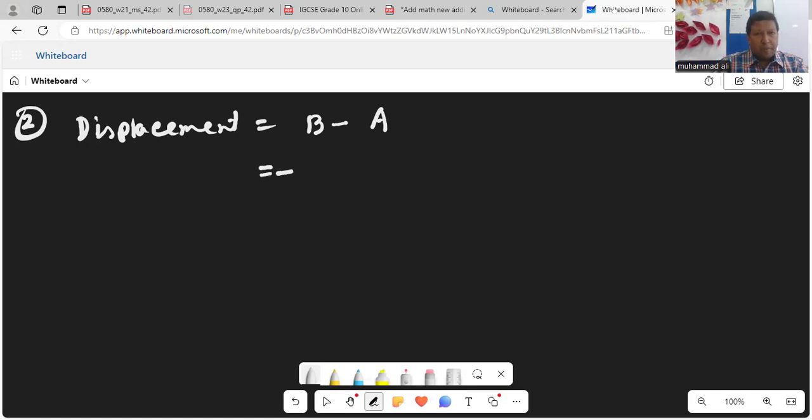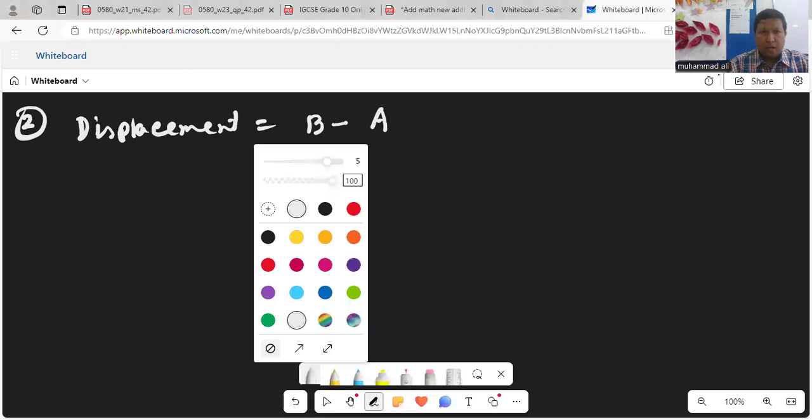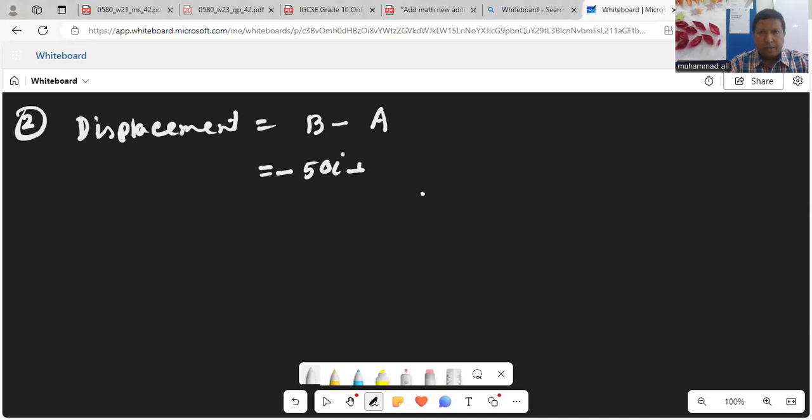So position vector of B is minus 50i plus 18j minus A. Position vector of A equals to 60i minus 40j. So it will be 60i plus 40j. If we subtract we will get minus 110i plus 58j. So this is displacement.